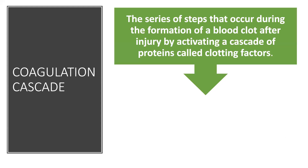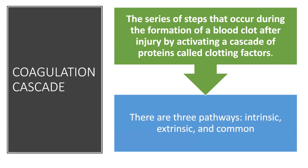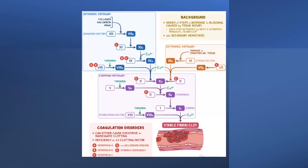The coagulation cascade is a series of steps that occur during blood clot formation after injury, by activating a cascade of proteins called clotting factors. There are three pathways: intrinsic, extrinsic, and common. In the intrinsic pathway, collagen, kallikrein, and HMWK act on clotting factor XII. The blood factors are given Roman numeral numbers. Factor XII is converted to XIIa.